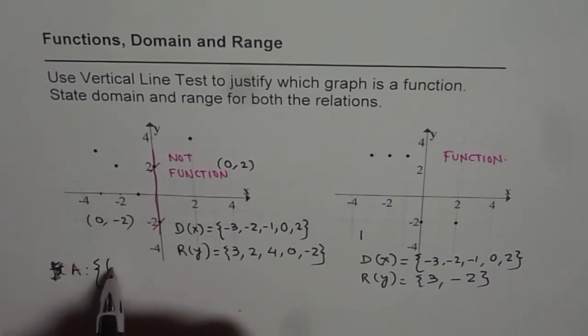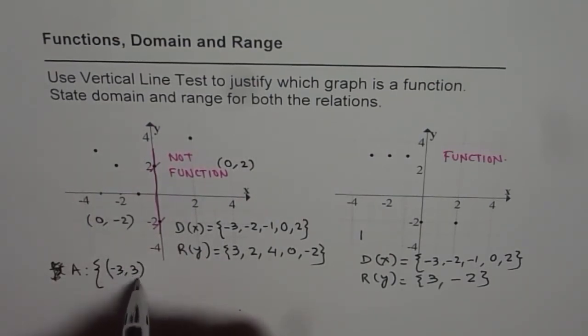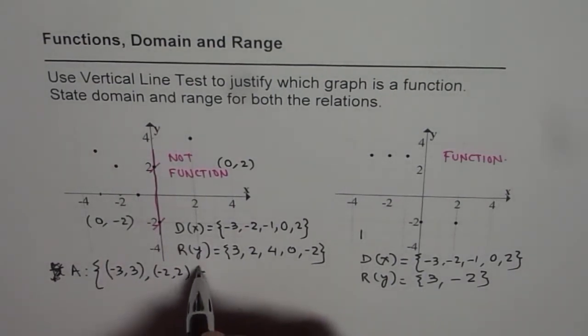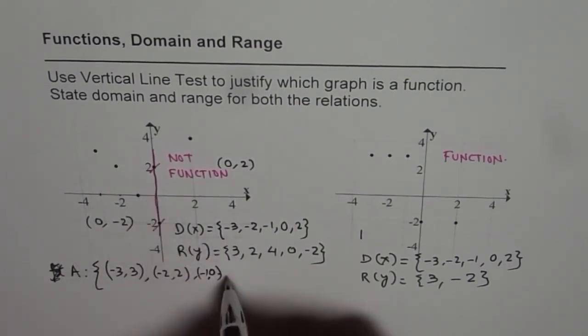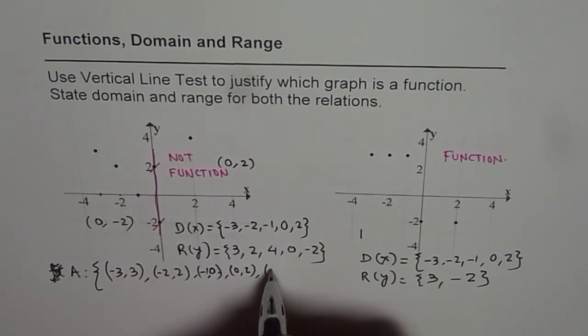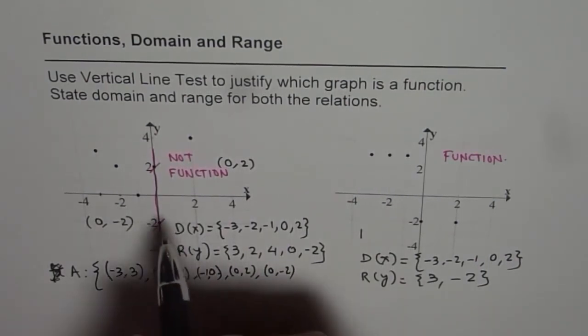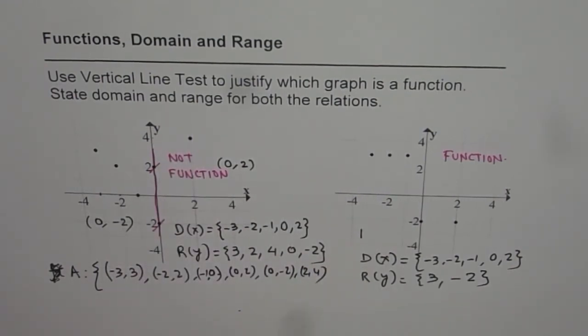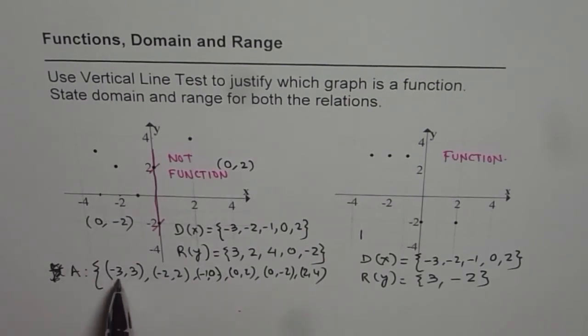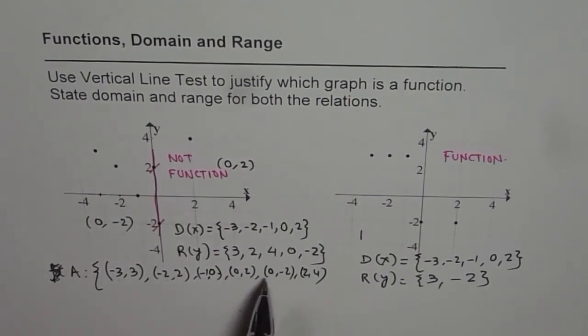This one is (-3, 3). And then we have (-2, 2). And then we have (-1, 0). And then we have (0, 2). Then we have (0, -2). And then we have (2, 4). So you can check - six points total.